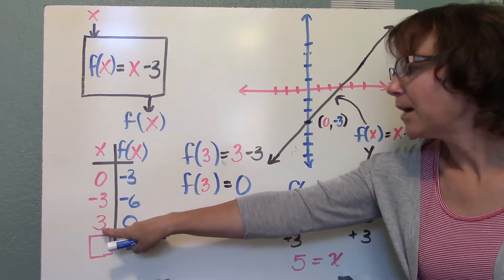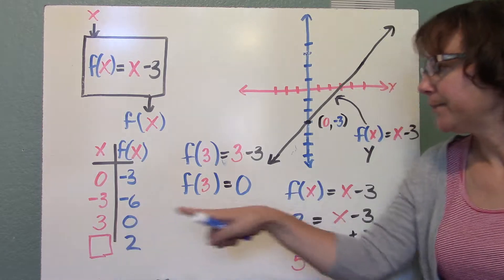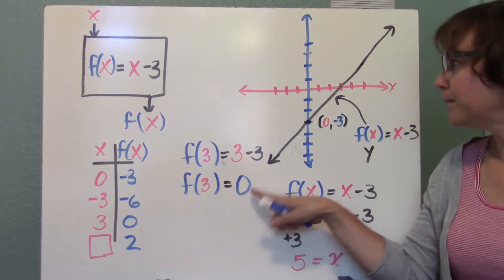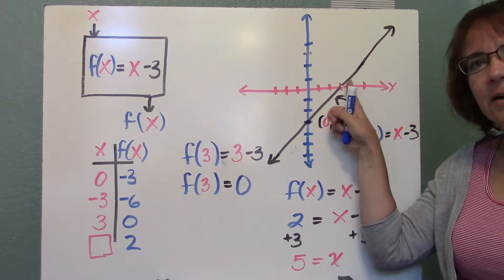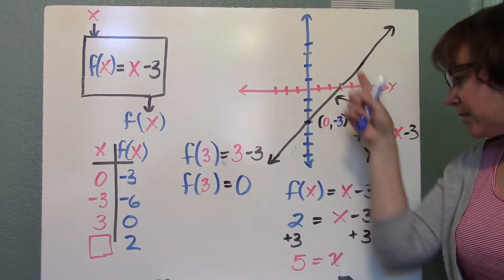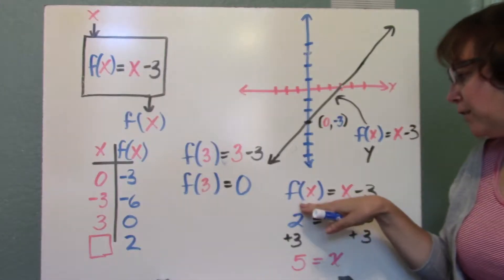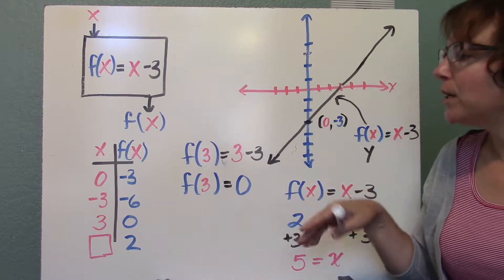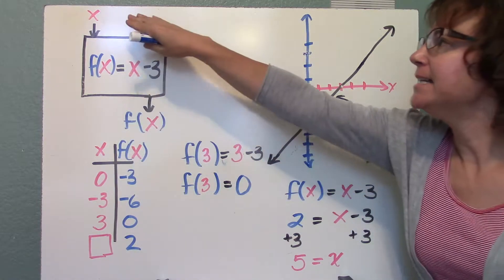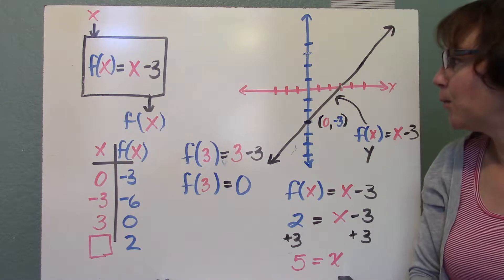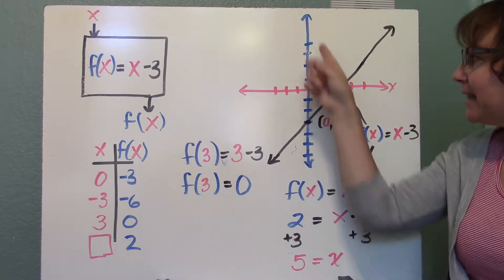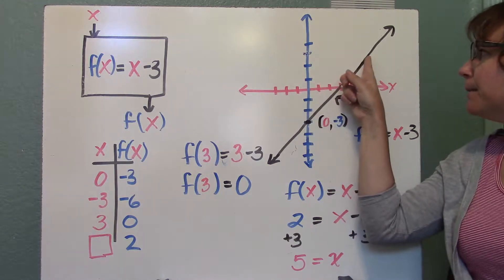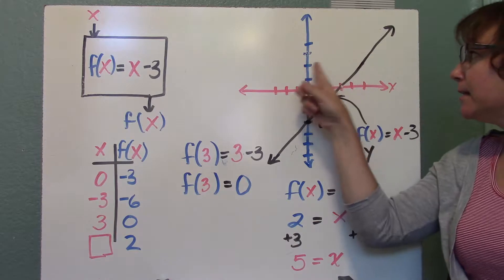Let's find out what happens when our input is 3. f of 3 is equal to 3 minus 3, so f of 3 equals 0. We can see that right here on the graph. Now let's use the graph and function notation to figure out what happens if we know that f of x is 2. So we know our output is 2, and we want to find what our input is when the output is 2. Looking at the graph, it looks like the input would be about 5.